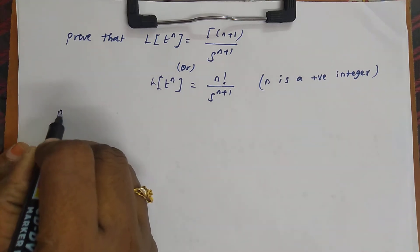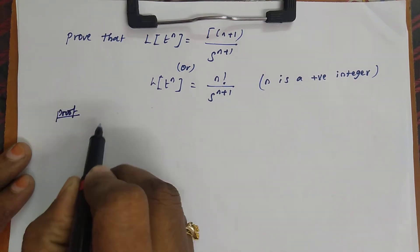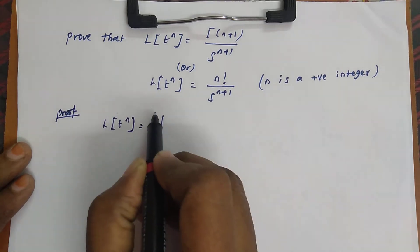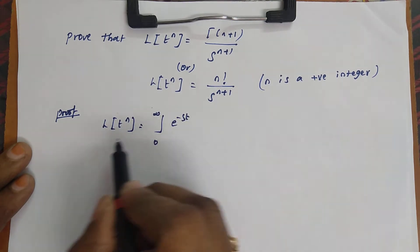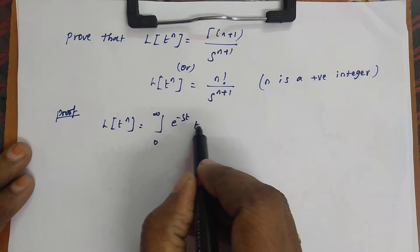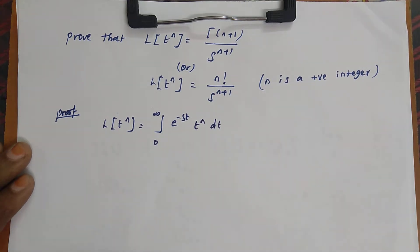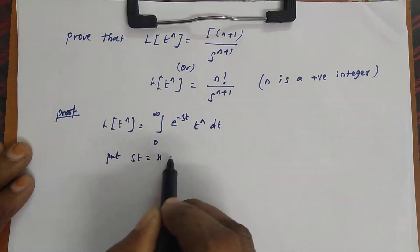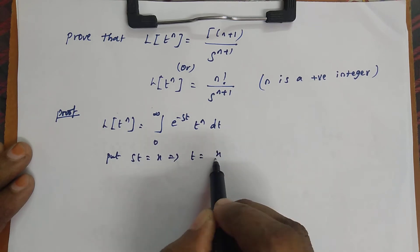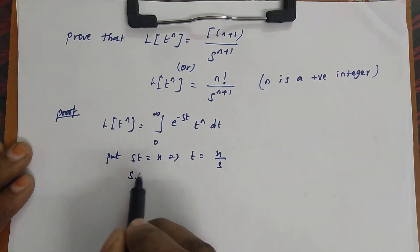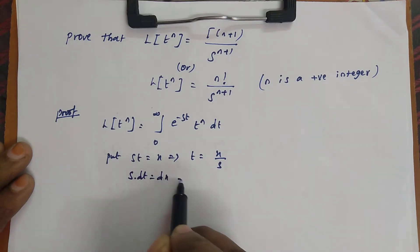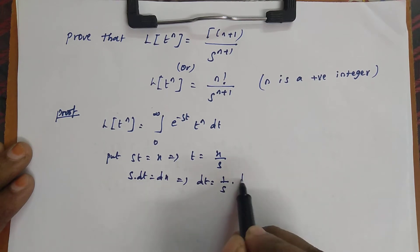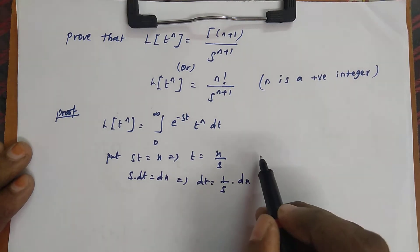Now look at the proof. We take the left-hand side, L of t power n, applying the definition of Laplace transform: integral from 0 to infinity of e power minus st into f of t, where f of t is t power n, into dt. Now we give a substitution: put st equal to x, which implies t equals x by s, and s into dt equals dx, so dt equals 1 by s into dx.